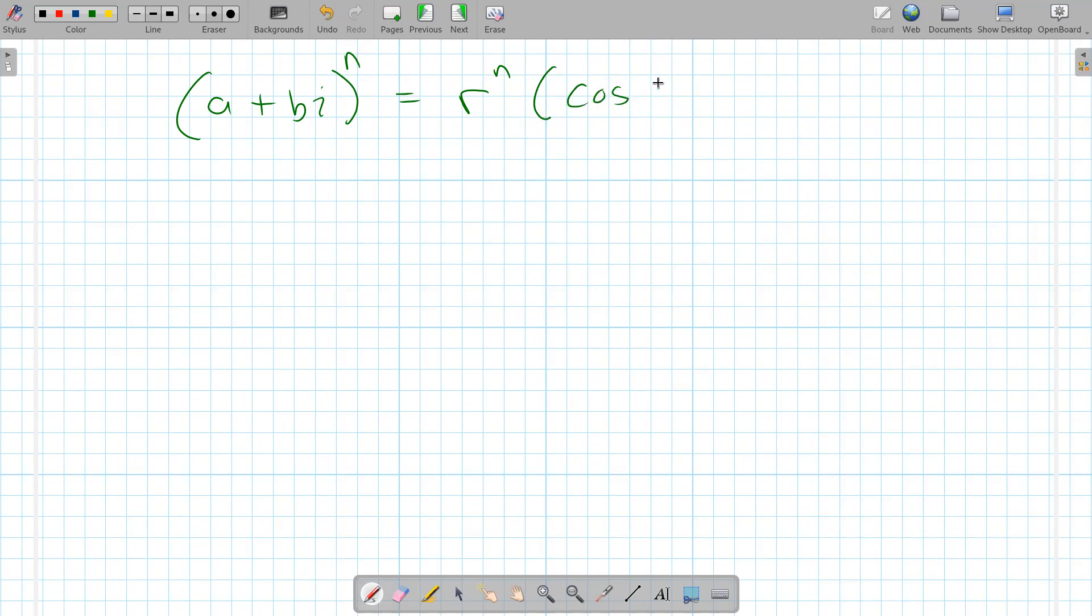times the cosine of the angle that original vector made, theta, times n, plus i sine of n times theta. r to the n happened to be one-half.